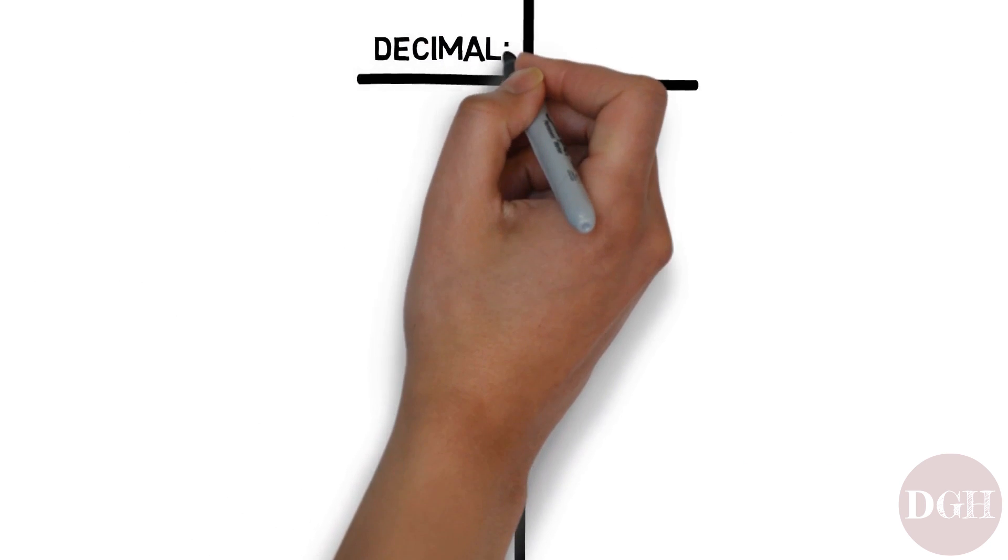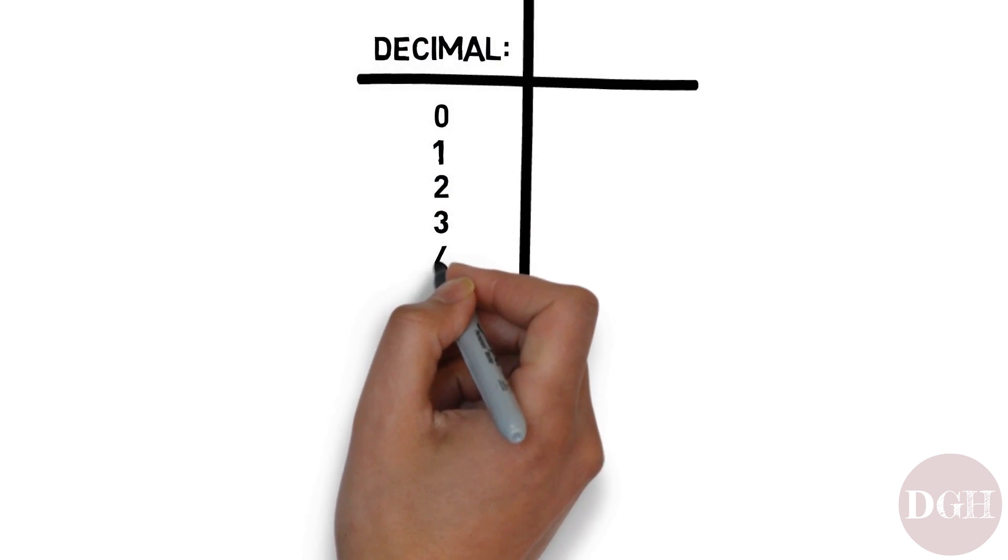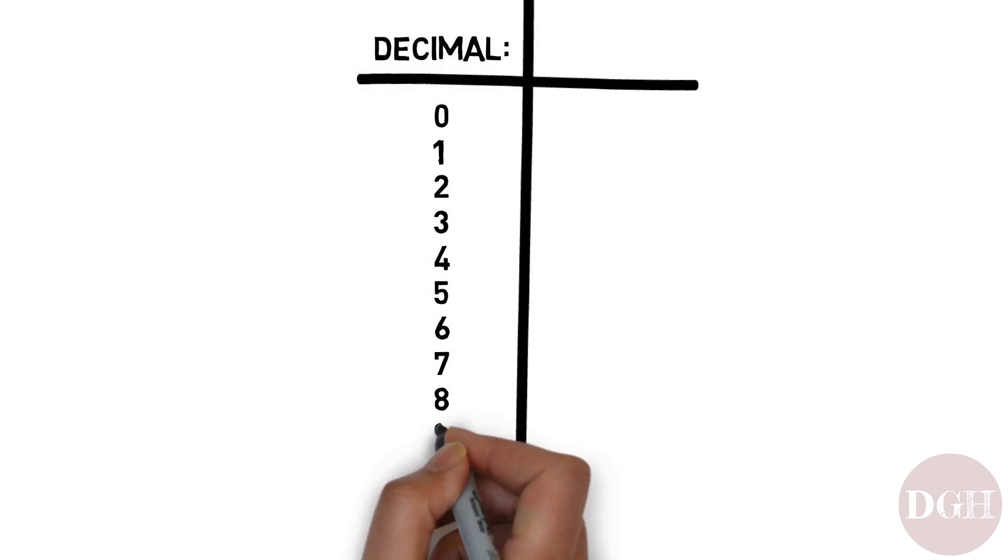With the decimal system, we count 0, 1, 2, 3, 4, 5, 6, 7, 8, 9. Once we get to 9, we've run out of numbers, so we have to add another digit. So we make 1, 0 to make 10.